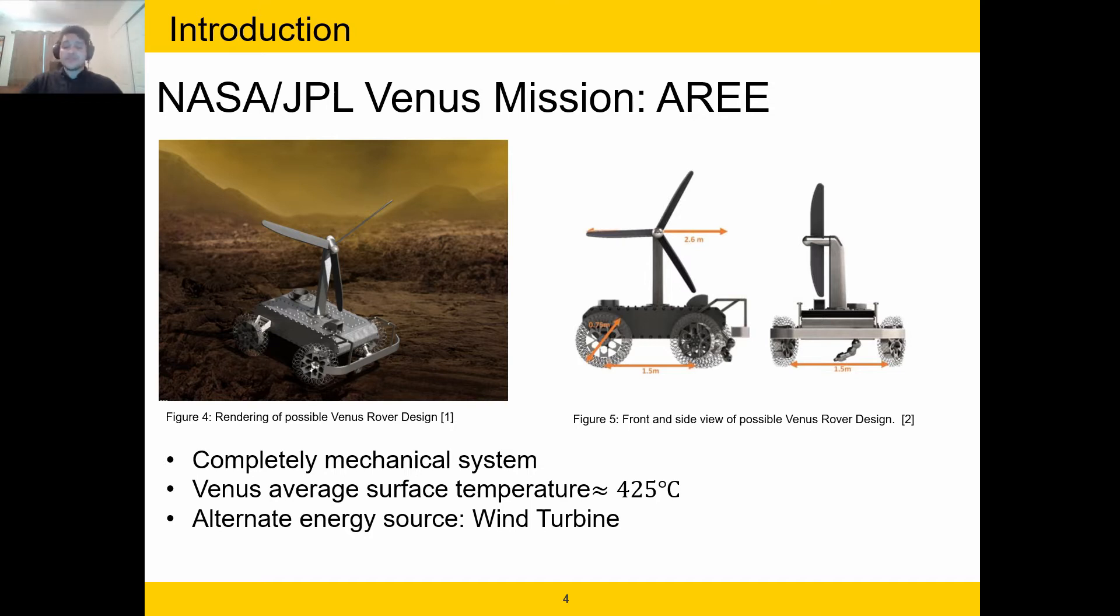The extreme temperatures in combination with the fact that there is a powerful greenhouse effect and therefore plenty of cloud coverage on the planet makes photovoltaic technology virtually useless. Therefore, another power source is required, and this alternative energy source was chosen to be a wind turbine for there's evidence of there being strong enough Venusian winds to power the rover. The team itself has been tasked with designing this turbine for the future Venus rover.